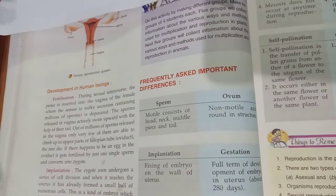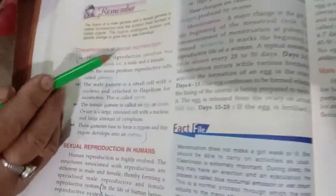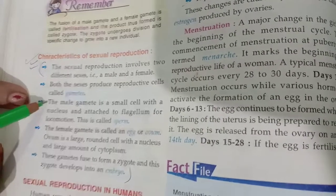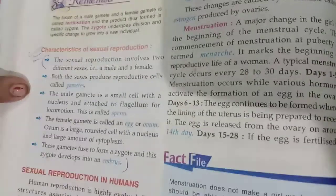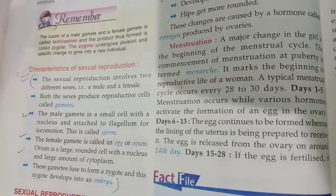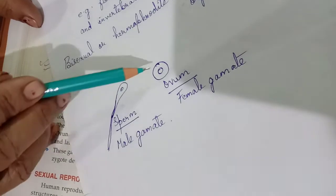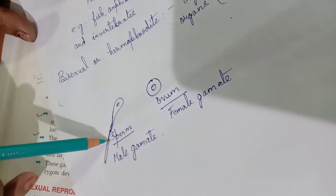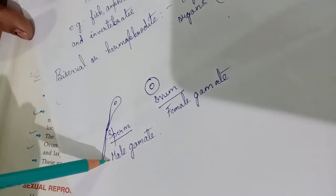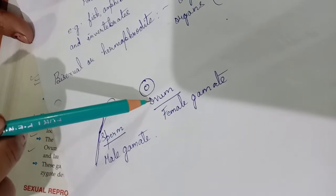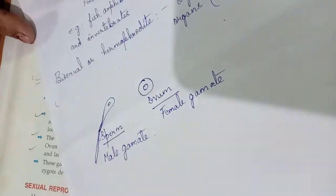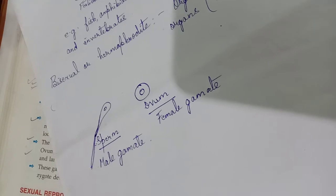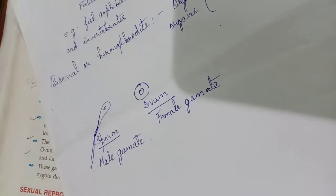Now mark in your book the characteristics of sexual reproduction. The sexes produce reproductive cells called gametes. The male gamete is called sperm and the female gamete is called ovum. The sperm is a small cell with a tail-like structure called flagella and a nucleus. It is produced in the testes. The ovum is produced in the ovaries. Testes and ovaries are both endocrine and exocrine glands.